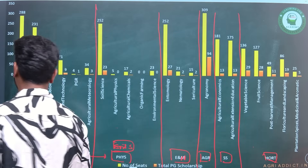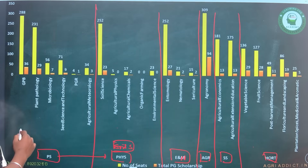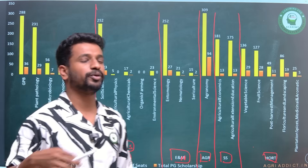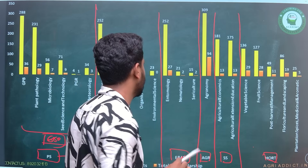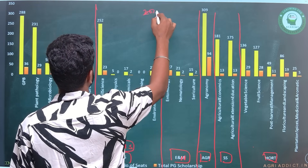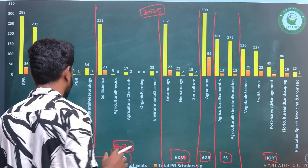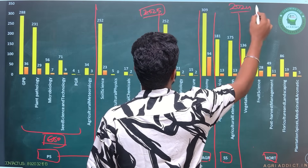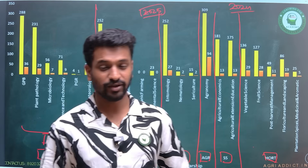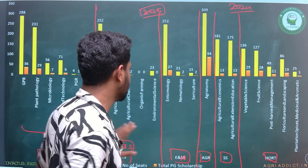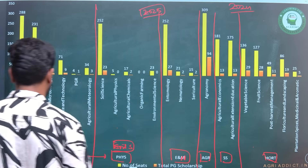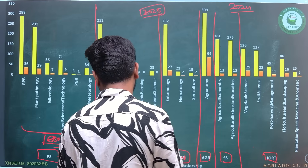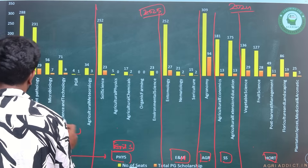As you can see, for Plant Sciences the total number of ICAR seats is 680. This number will slightly vary year to year — it may or may not vary when the final brochure is released. For example, if it is released for 2025 admissions, you can compare it. But from the ICAR counseling brochure 2024, there will be no much difference between the number of seats compared to different years — maybe one or two seats might change. So there are a total of 680 seats in Plant Science, which is the highest number of ICAR seats available for any subject.